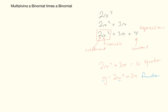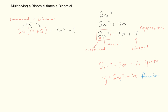You have previously multiplied a monomial times a binomial — one term times two terms. For example, 3x times (x + 2). We call this expanding or distributing, using the distributive property: the single term gets multiplied by each term in the binomial, giving us 3x squared plus 6x. That's a review from grade 9.